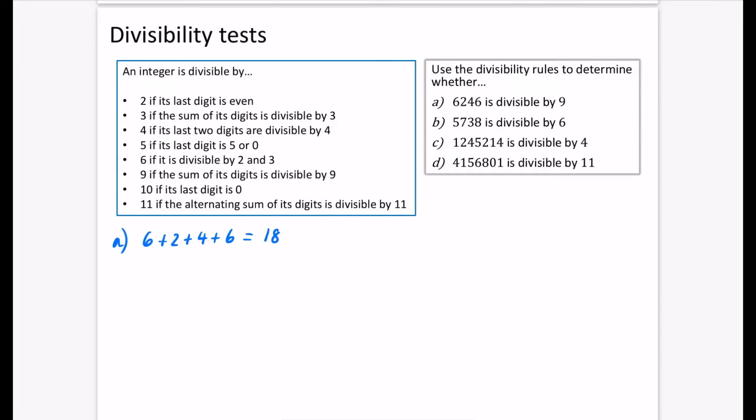We can say 18 is equal to 2 times 9. So if we want to use the posh language, we could say that 9 divides 18. Hence, we could say that 9 divides 6,246.